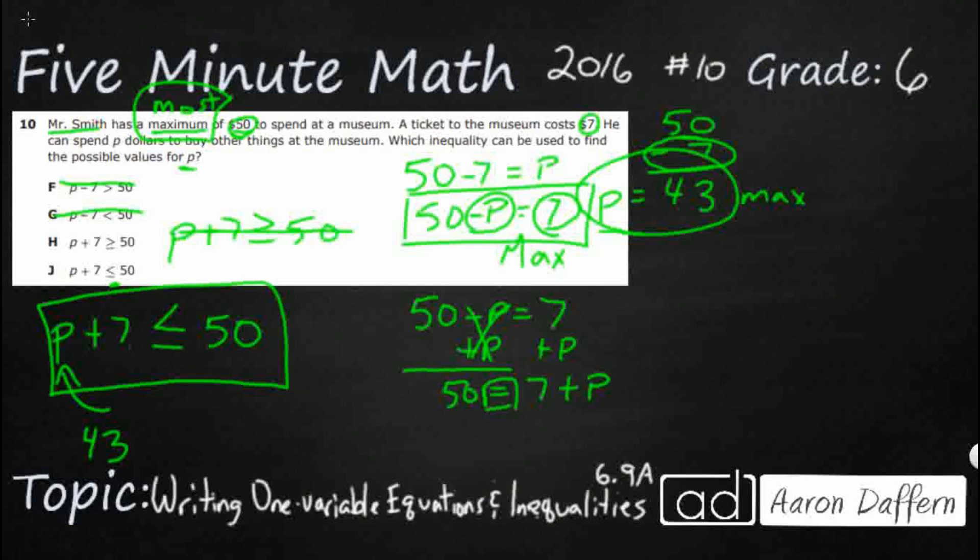Because remember, 43 is all the rest of the money he has to buy on souvenirs and at the gift shop. He can spend less if he wants to. He just cannot spend more, but he can spend equal. And that's where we get this J. P plus 7 is less than or equal to 50.